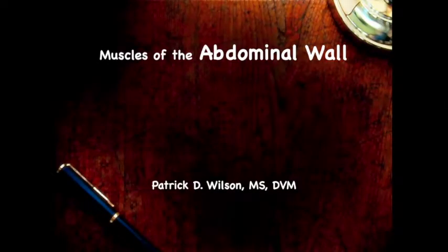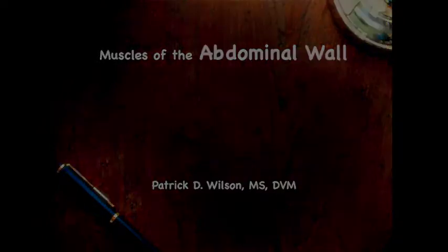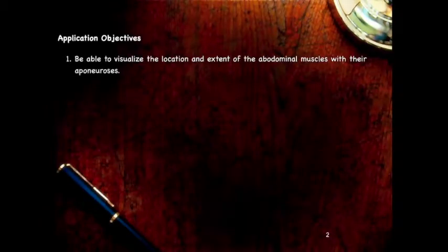Welcome to the abdominal wall. We're going to start out here by talking about the muscles, and in another lecture we'll talk about the innervation to the abdominal wall. Our objectives for this section are to be able to visualize the location and extent of the abdominal muscles and their aponeuroses.